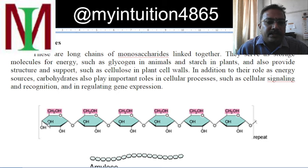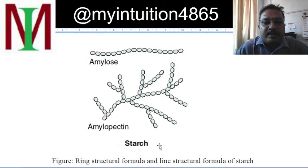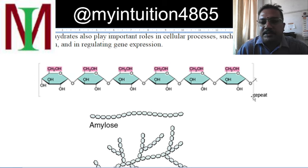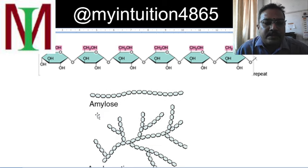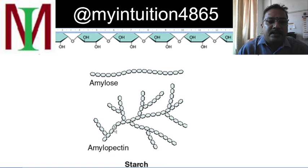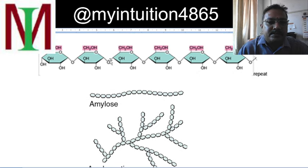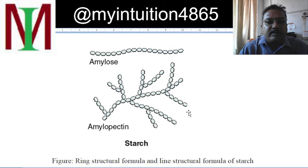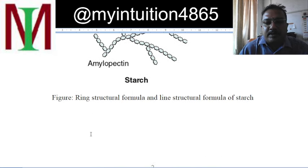One of the polysaccharides is starch. Starch is made of glucose molecules connected one by one in a repeating structure along a chain. It has an amylose structure as well as an amylopectin structure. The line structure here represents amylose as well as amylopectin — they are long chains, and therefore we call them polysaccharides. Starch is an example of a polysaccharide.